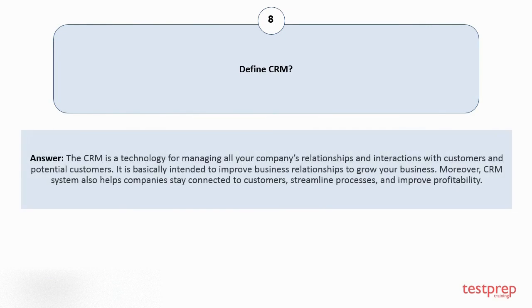Question number 8: Define CRM. CRM is a technology for managing all your company's relationships and interactions with customers and potential customers. It is basically intended to improve business relationships to grow your business. Moreover, the CRM system also helps companies stay connected to customers, streamline processes, and improve profitability.